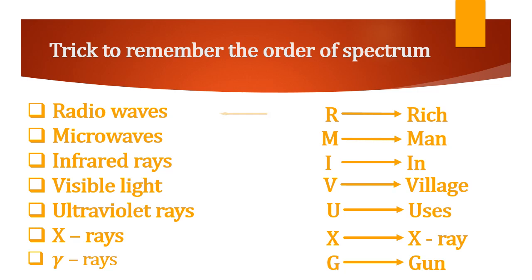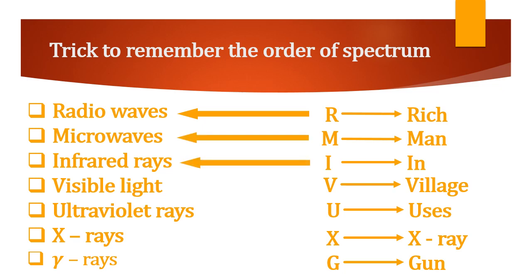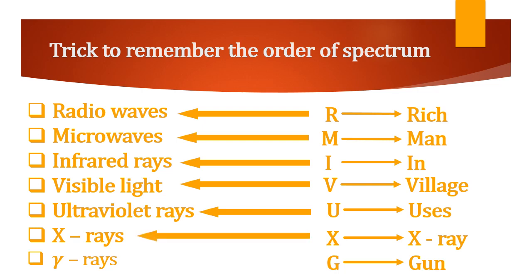You can see that R for rich and R for radio waves. M for man and M for microwaves. I for in and I for infrared rays. X-rays is X-rays, and G for gamma rays.